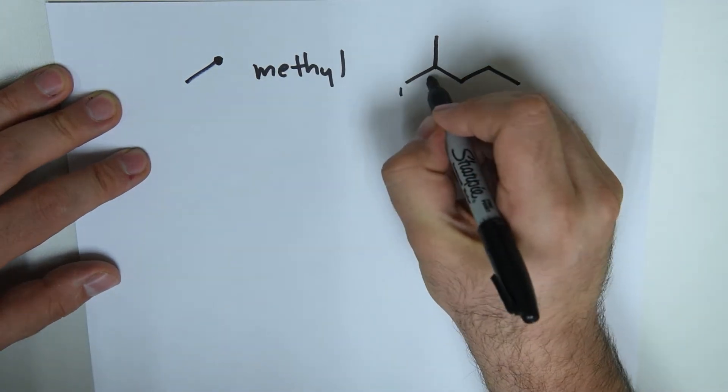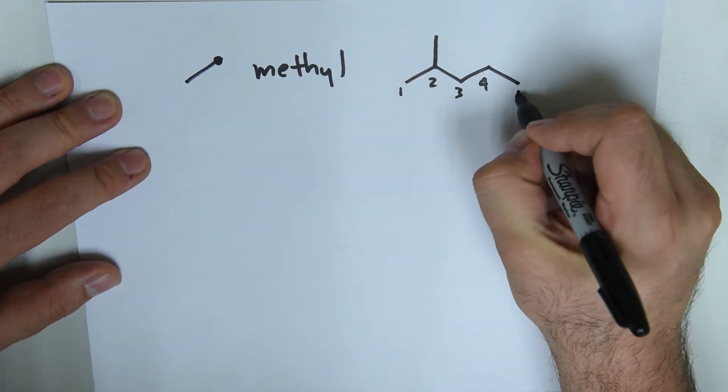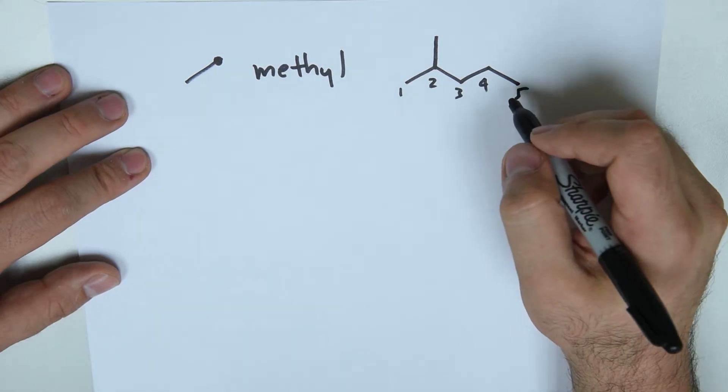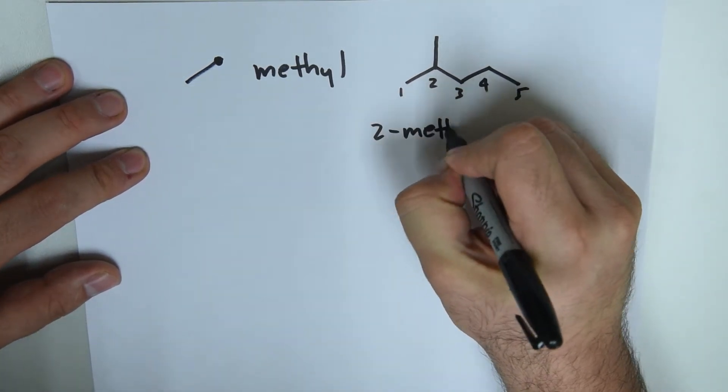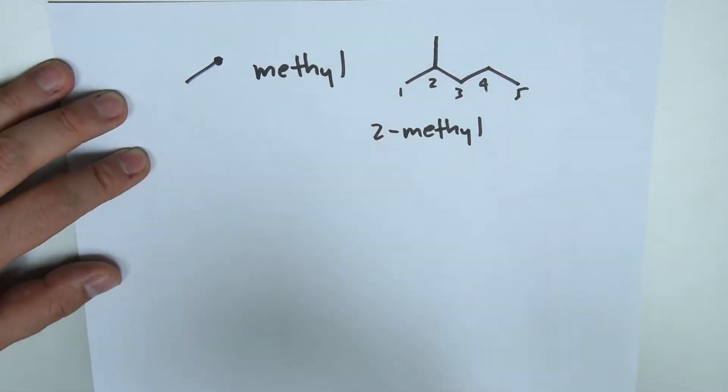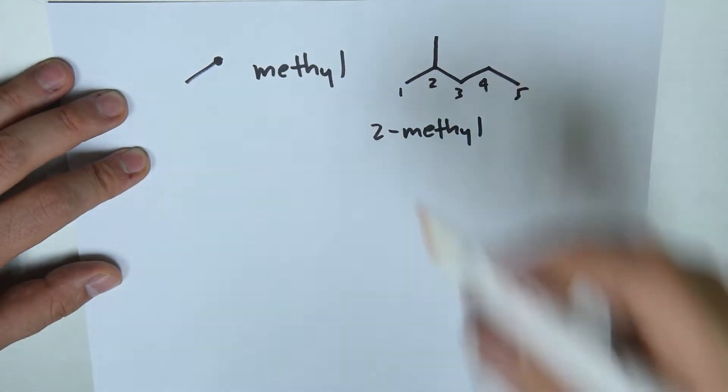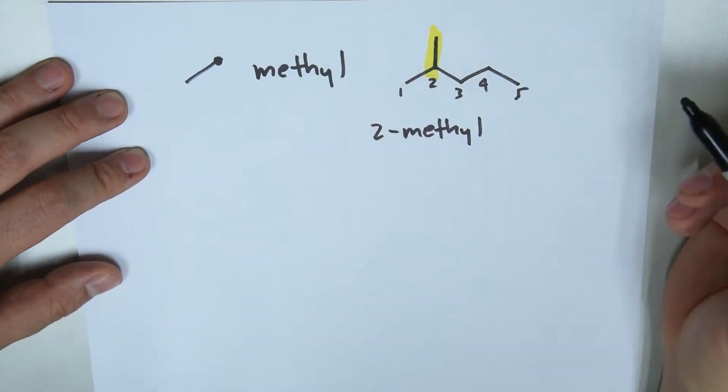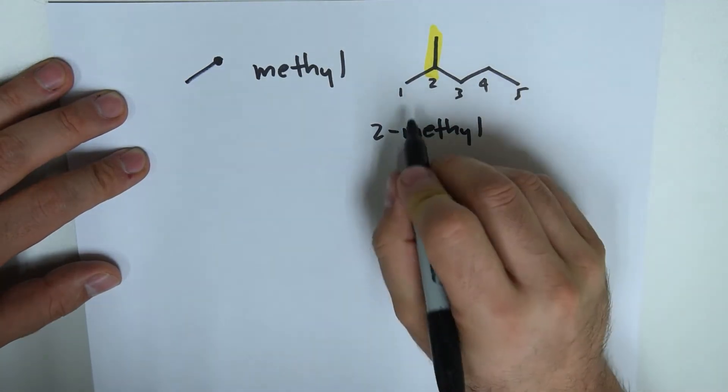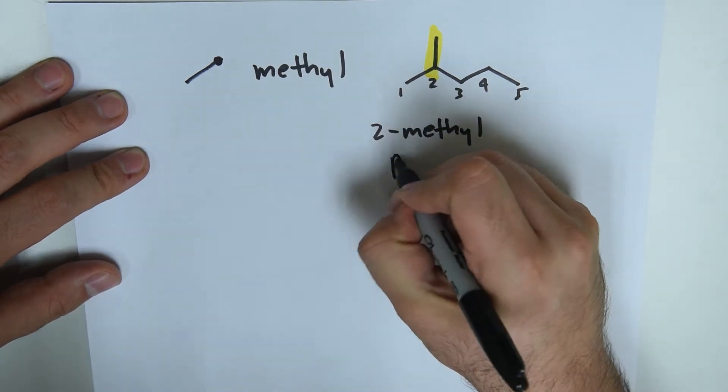My main chain is going to be one, two, three, four, five. And the IUPAC name for this molecule would be two-methyl, which is the position on the main chain at which the methyl is attached. And then we have the main chain, pentane.